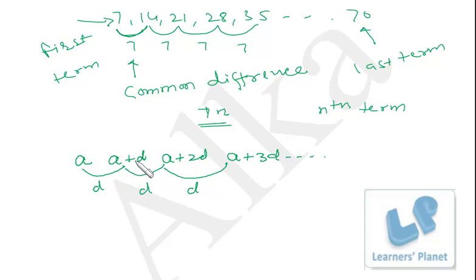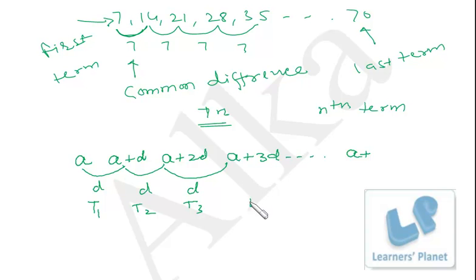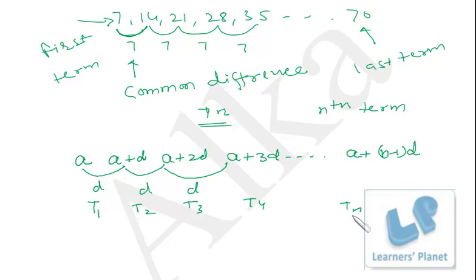Looking at the pattern: in the first term (t1) there is no d, in the second term (t2) there is 1d, in the third term (t3) there are 2d's, in the fourth term (t4) there are 3d's. So in the nth term, d appears (n−1) times. Therefore, the nth term of an AP is: tn = a + (n−1)d. If you put n=1 you get the first term, n=2 gives the second term, and so on.